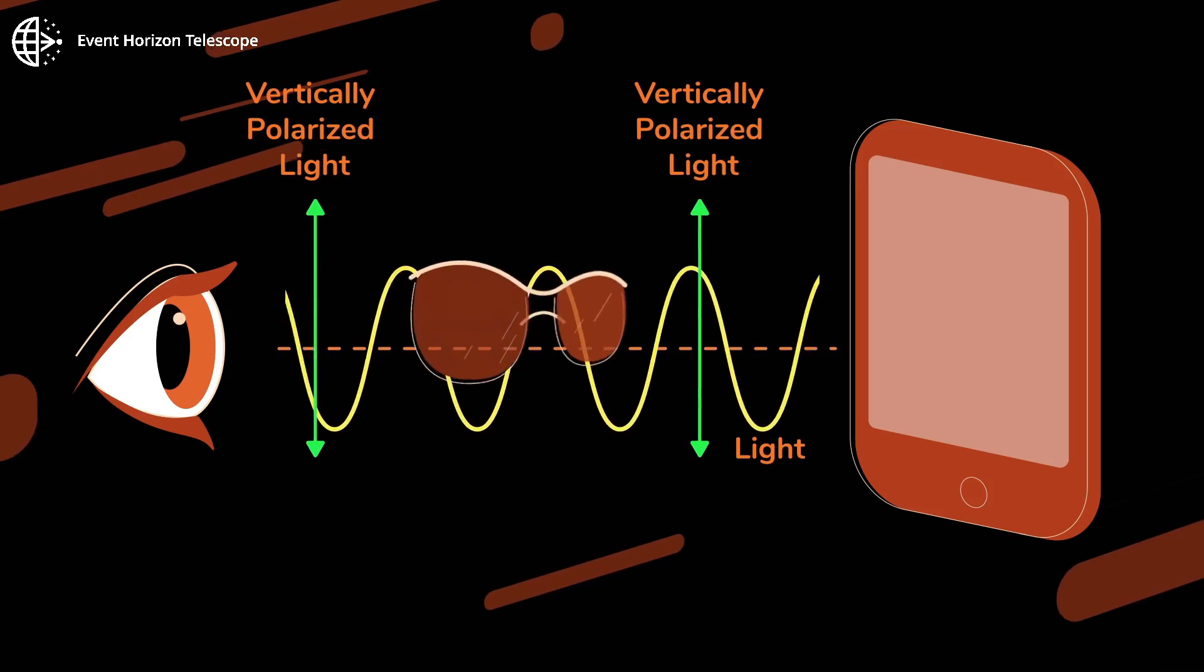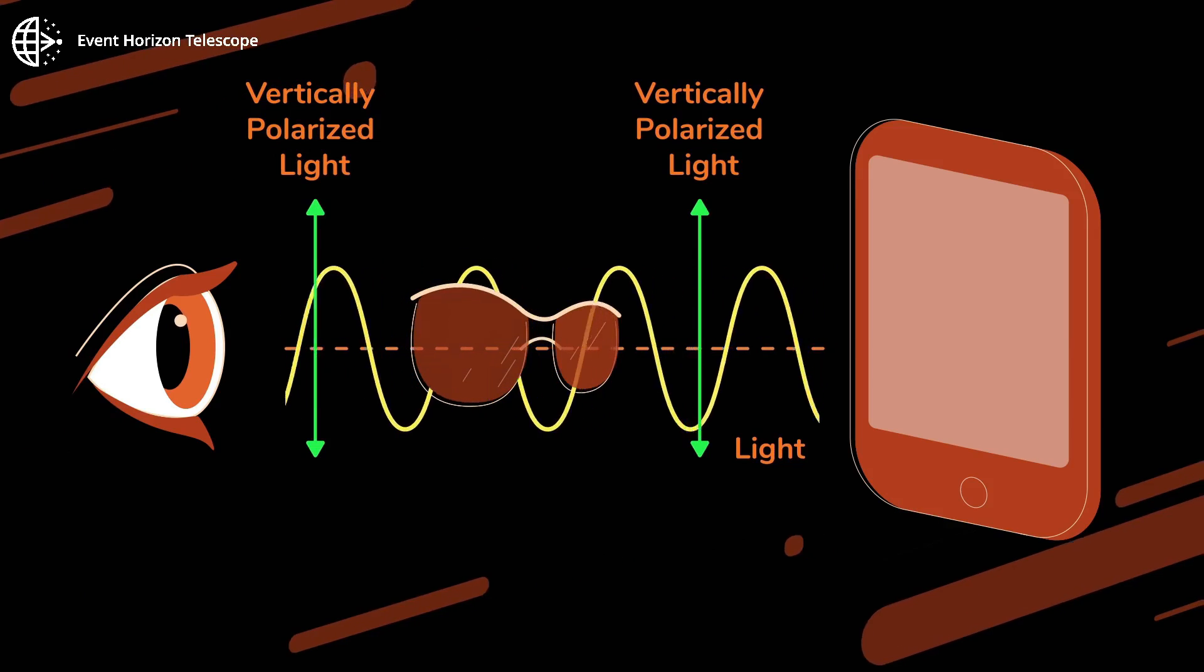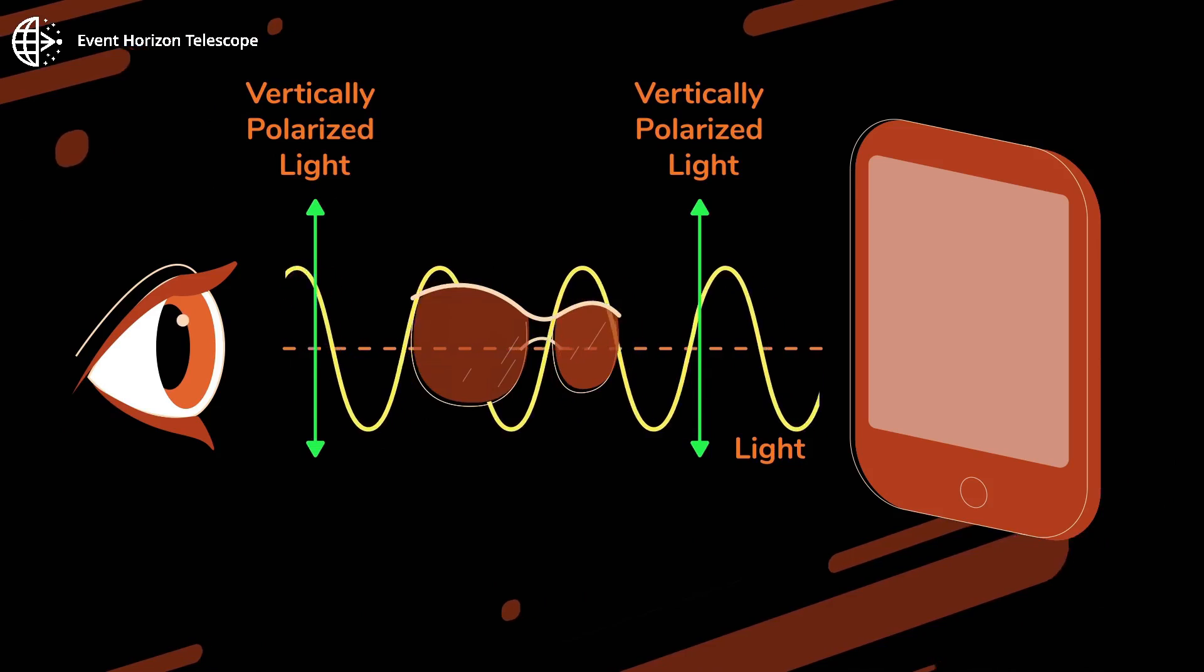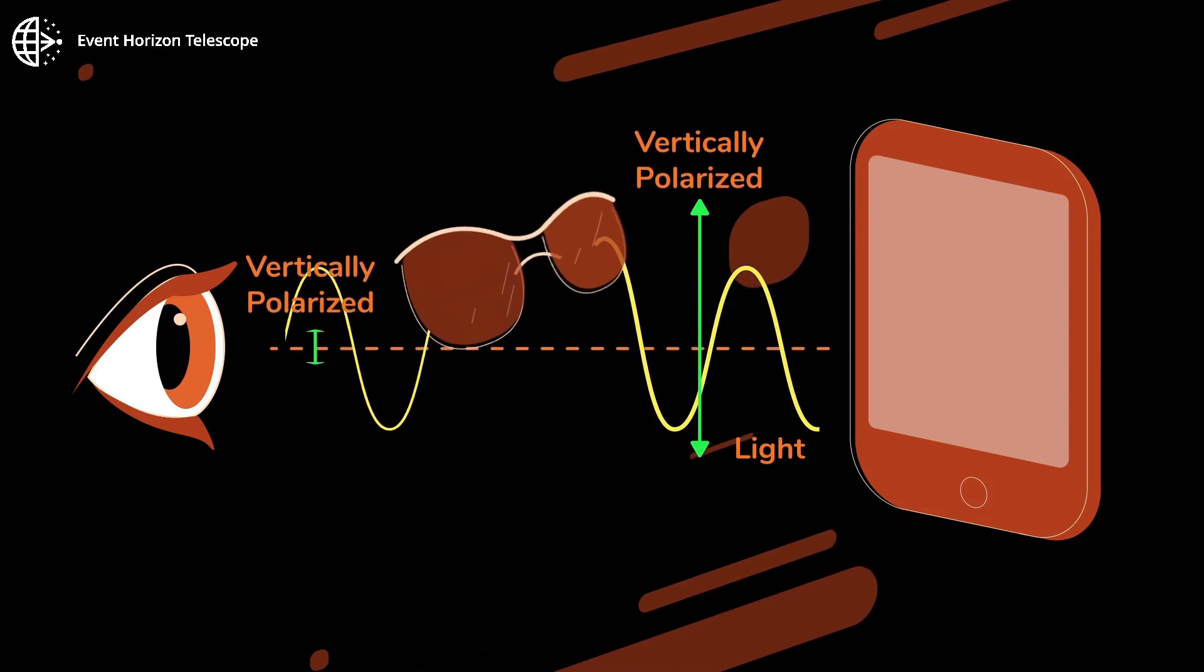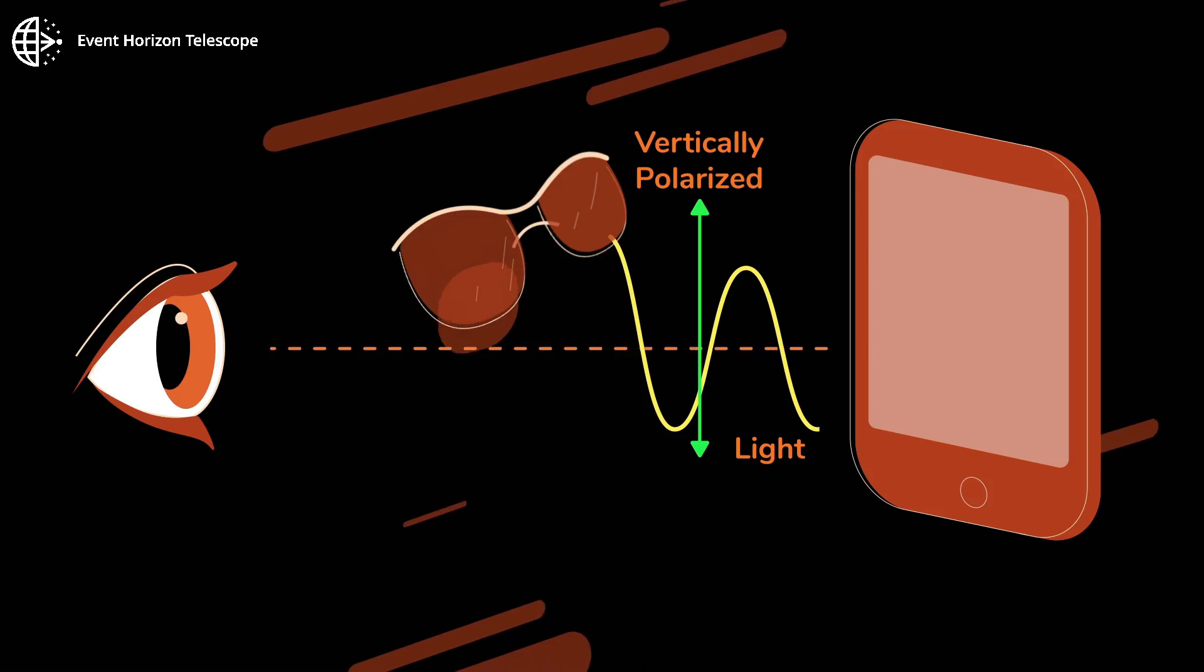Your polarized sunglasses are a polarized filter. Here, they let vertical polarization through. If we rotate them, almost all the polarized light gets blocked.